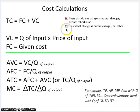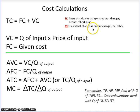Variable costs are costs that change as output changes. So as we make more of a product, we're going to need more workers and more raw materials, for example. These costs will actually change as you change your output levels.